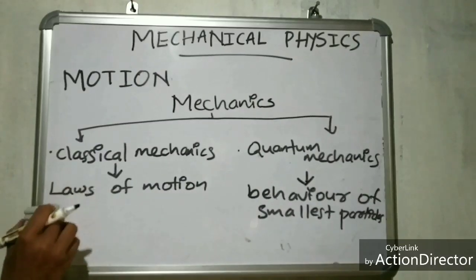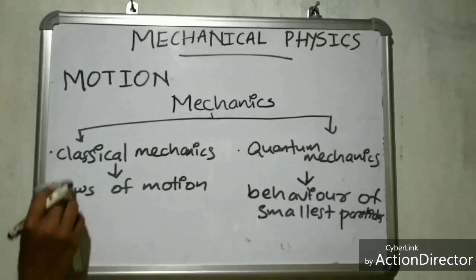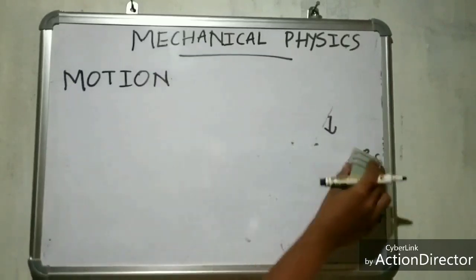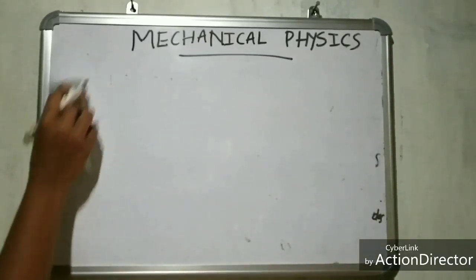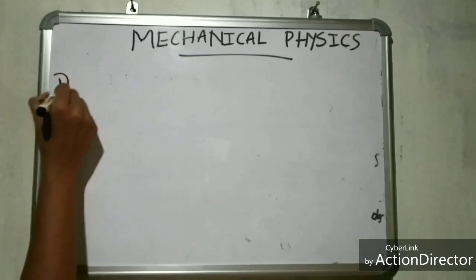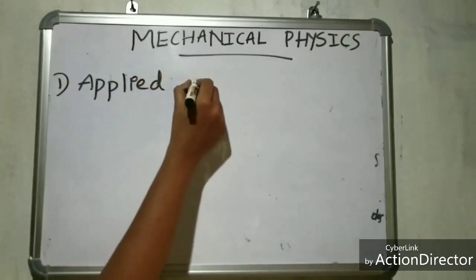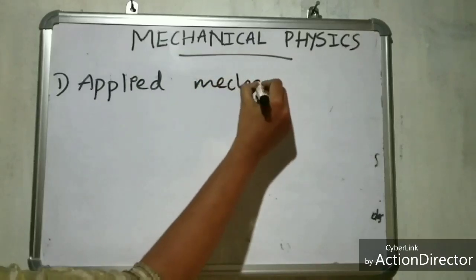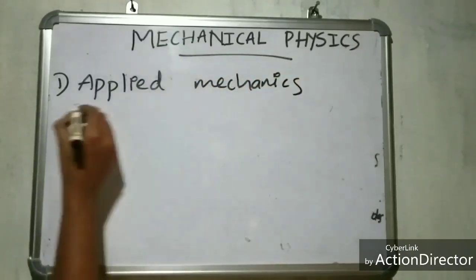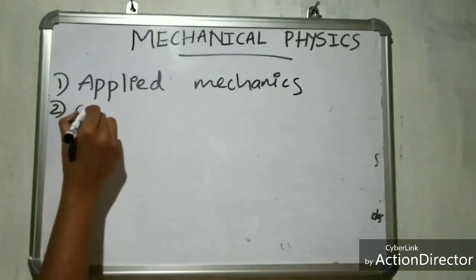There are eight main branches of mechanics. First one is Applied Mechanics. Second one, Celestial Mechanics.